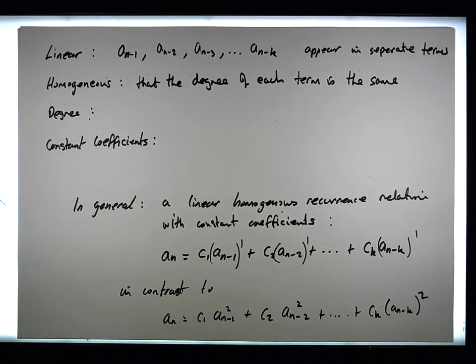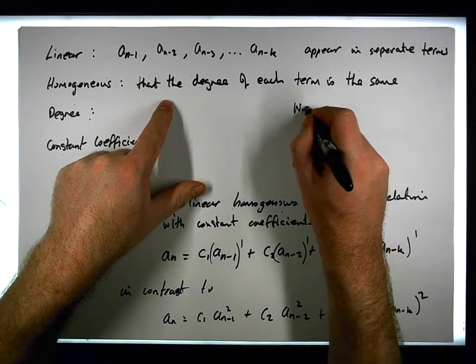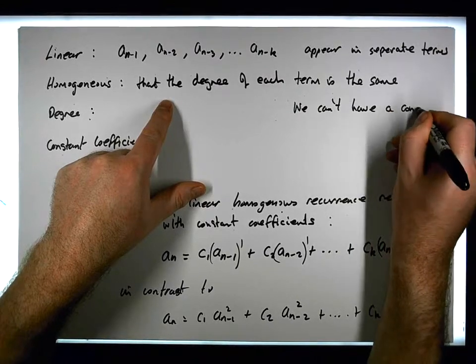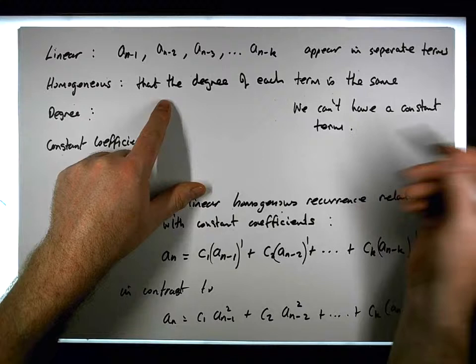Making them all squares, then it's homogeneous. Homogeneous also means that we can't have a constant, a constant term, because a constant term is effectively...